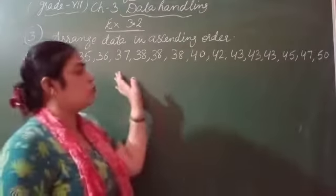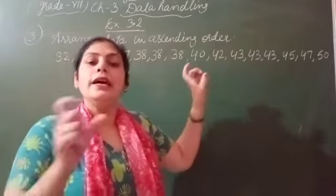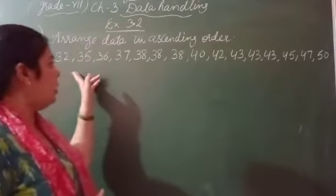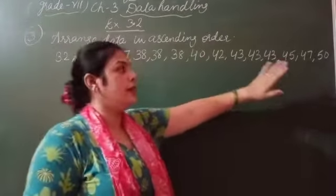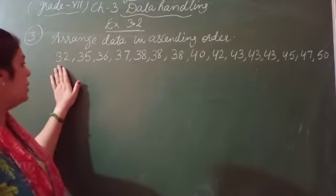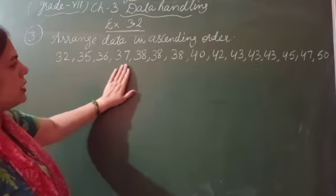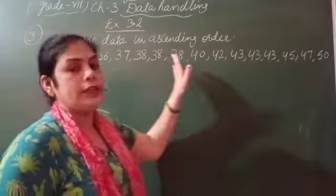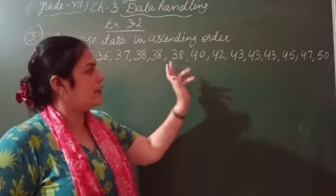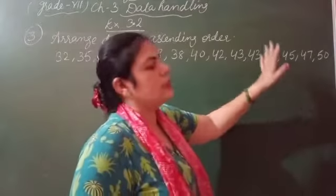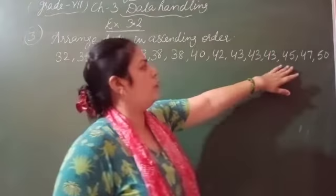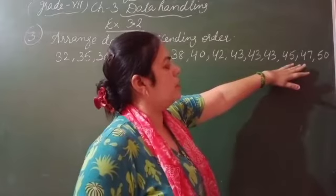Our first step is we have to arrange our data in ascending order, smallest to greatest. The lowest value is 32, 35, 36, 37, 38. 38 is the weight of 3 students, then 40, 42. 43 is also the weight of 3 students, then 43, 43, 45, 47, 50, which is the maximum weight.